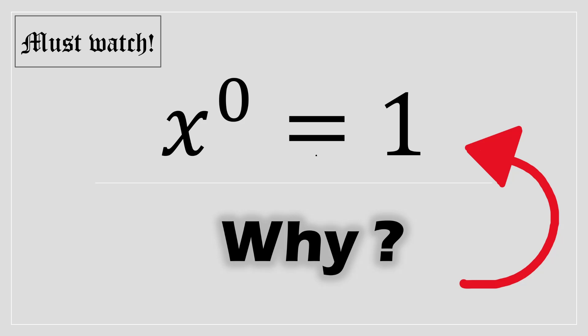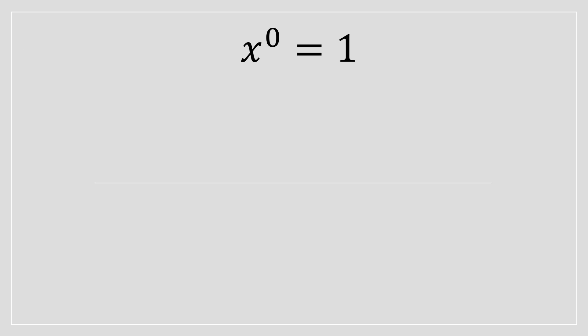Right, so why is this? Why is 5 to the power of 0 equal to 1? Why is a million to the power of 0 equal to 1? Why is this? Well, I'll show you why that is. Let's solve this proof. So let's get right into it.